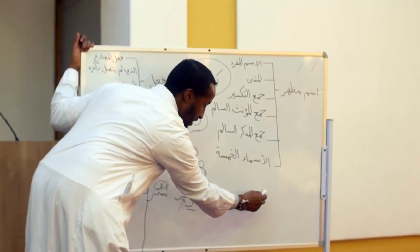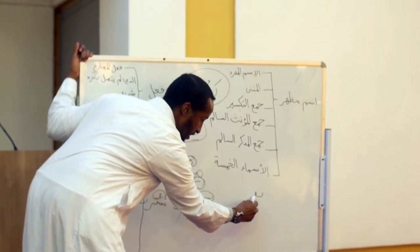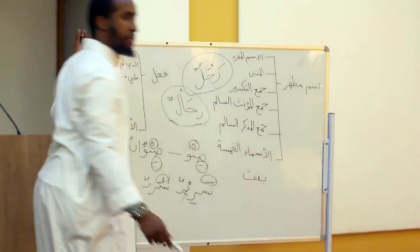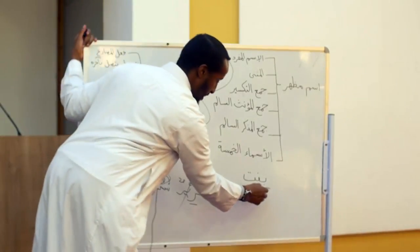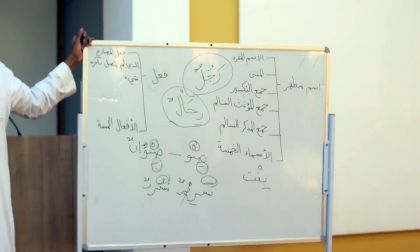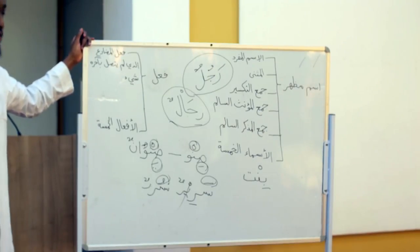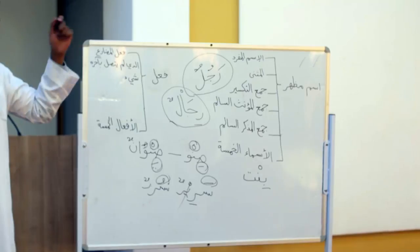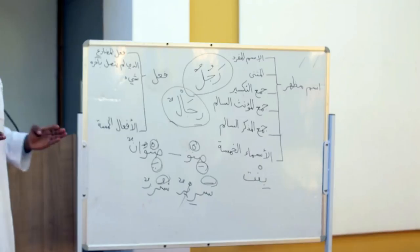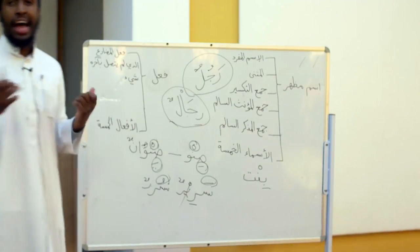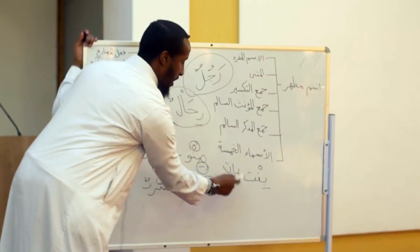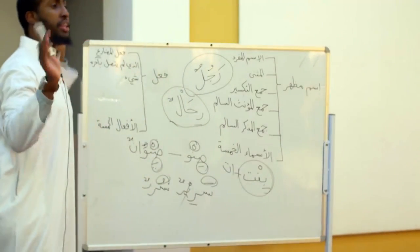For example, we have the word بِنْت, which means 'one girl.' If we use the term Jam'u al-Mu'anath al-Salim, what we mean is that all that's going to happen to the word is the alif and ta' is going to be added to it, and the word is not going to be tampered with — it's not going to be touched.